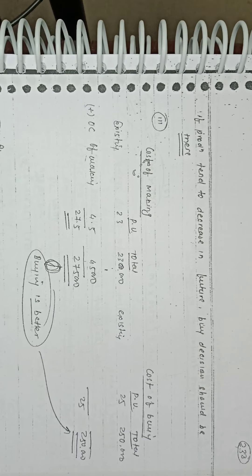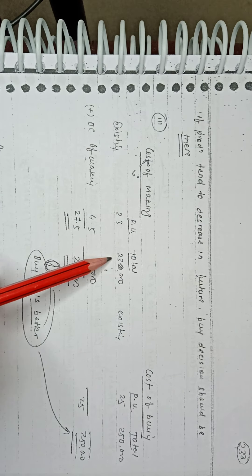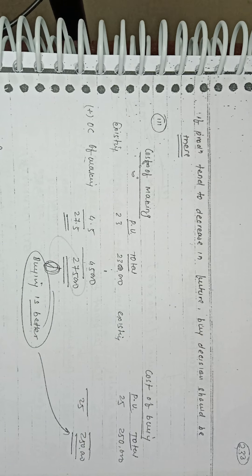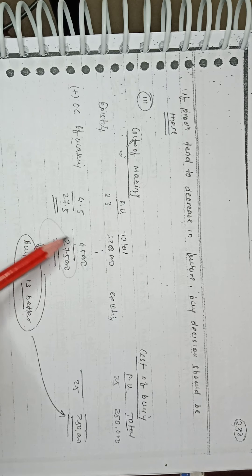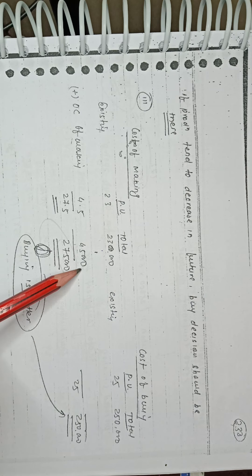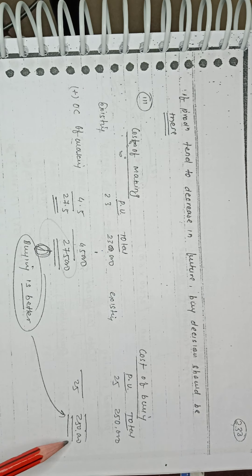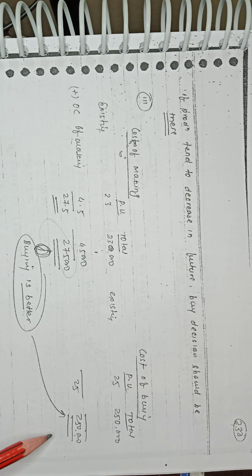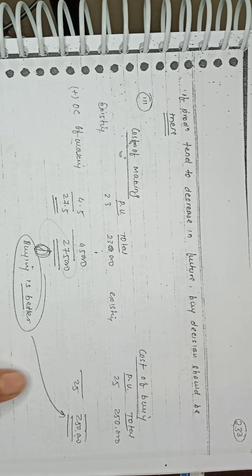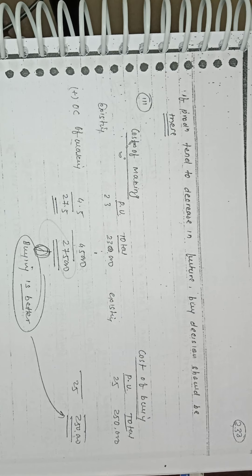With the opportunity cost of 45,000 added, the cost of making rises to 2,75,000. The cost of buying is 2,50,000. Previously it was 2,30,000 without the opportunity cost, and now with opportunity cost it is 2,75,000. So when an opportunity cost is available, the cost of buying at 2,50,000 is lower than making.